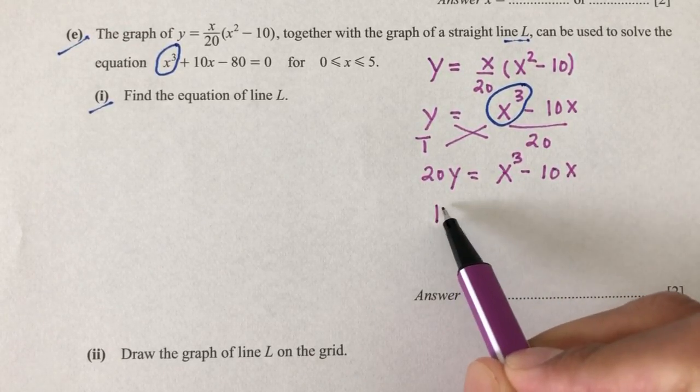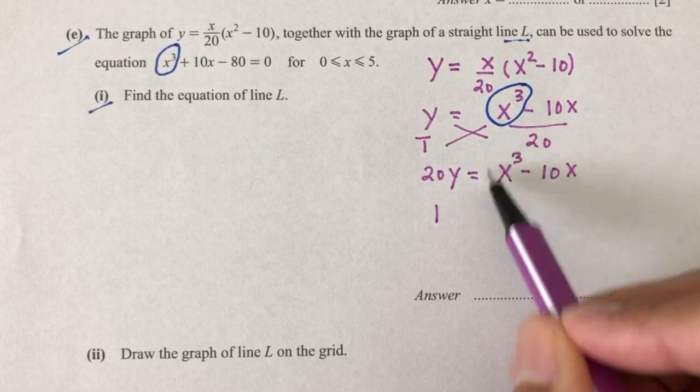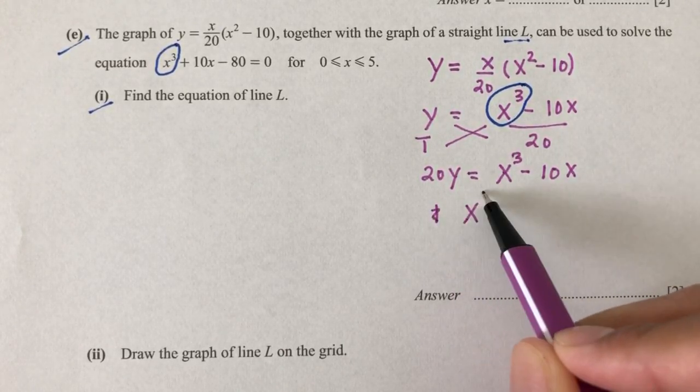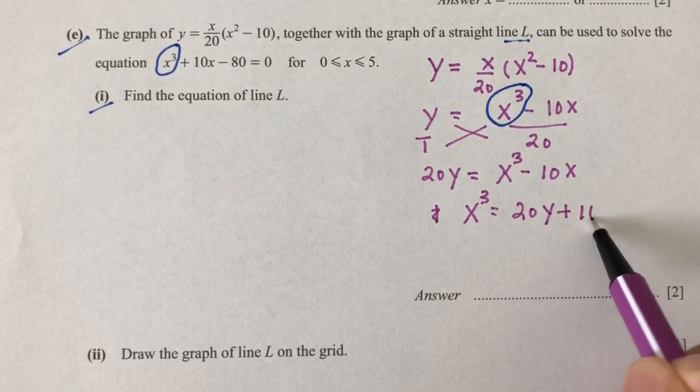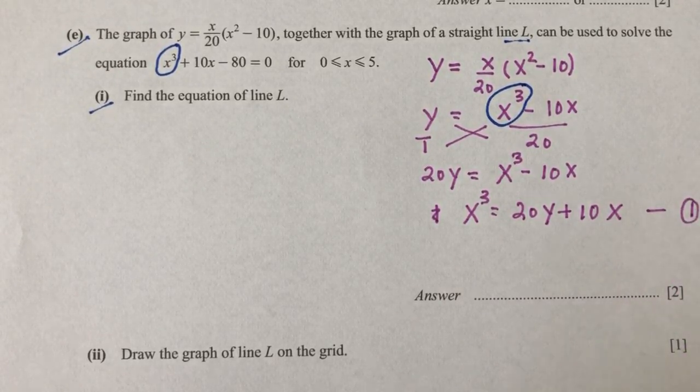So now we make this the subject of formula. You will have x power 3 equal to 20y plus 10x. That is the equation number 1.